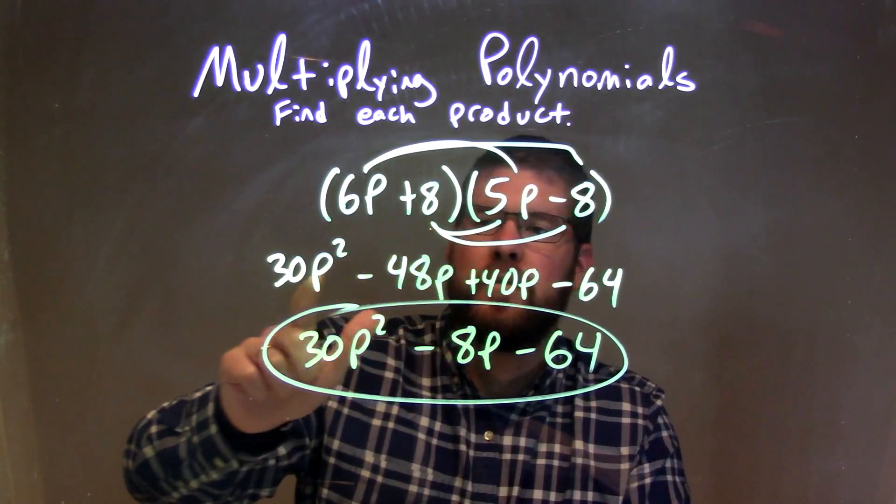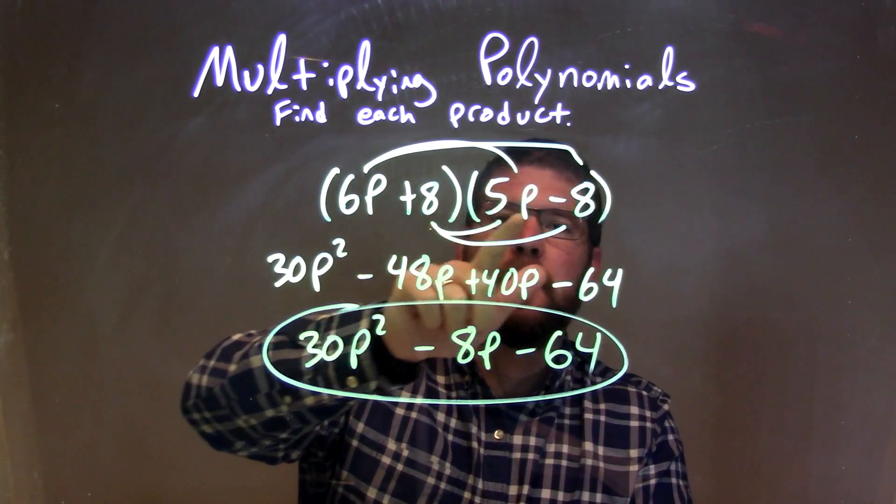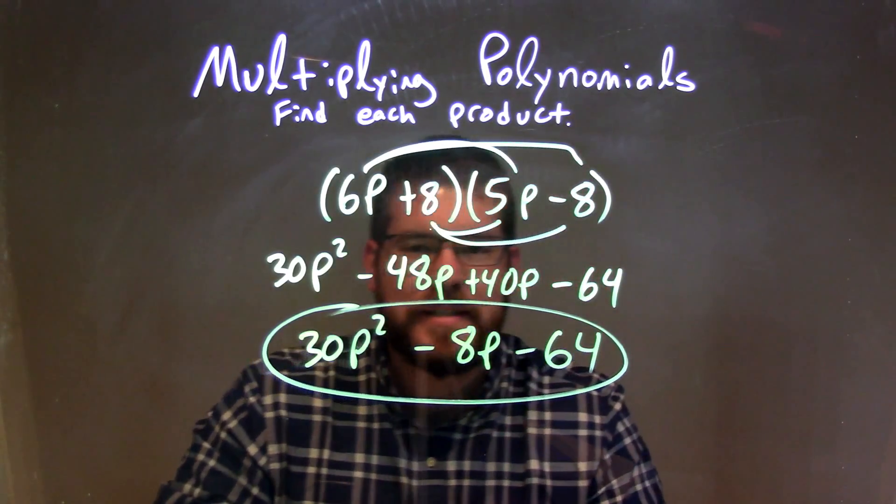6p times 5p was 30p squared, 6p times minus 8 was minus 48p, 8 times 5p is 40p, and 8 times minus 8 is minus 64.